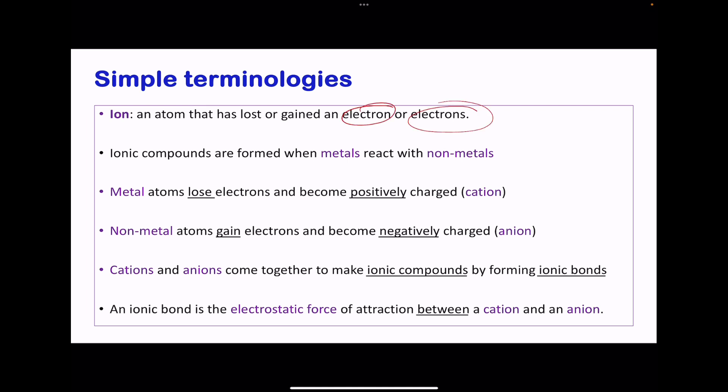Ionic compounds form between metals and non-metals. Metals lose electrons to become positively charged cations, while non-metals gain electrons to become negatively charged anions. The cations and anions attract each other forming ionic bonds and are called ionic compounds. An ionic bond is the electrostatic force of attraction between a cation and anion.